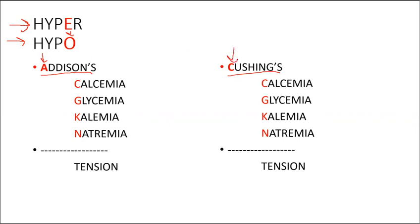And then I'm going to write down these in alphabetical order. So I'm going to start with calcemia. That's a c. And then I'm going to write glycemia, which is a g. So c comes before g and then kalemia and then natremia.